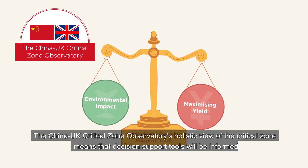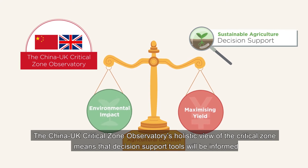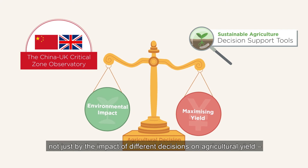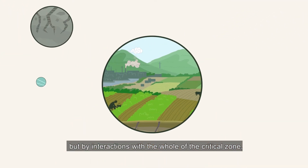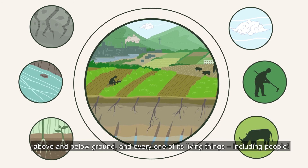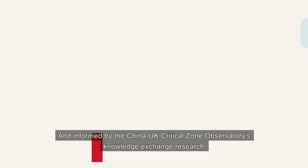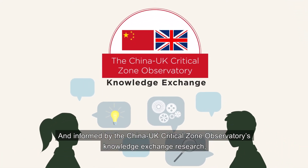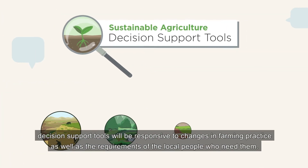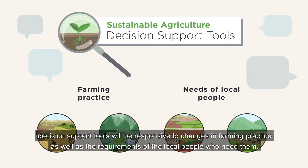The China-UK Critical Zone Observatory's holistic view of the critical zone means that decision support tools will be informed not just by the impact of different decisions on agricultural yield, but by interactions with the whole of the critical zone, above and below ground, and every one of its living things, including people. And informed by the China-UK Critical Zone Observatory's Knowledge Exchange research, decision support tools will be responsive to changes in farming practice as well as the requirements of the local people who need them.